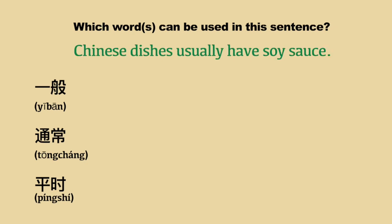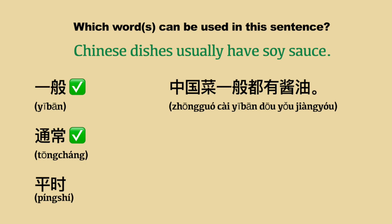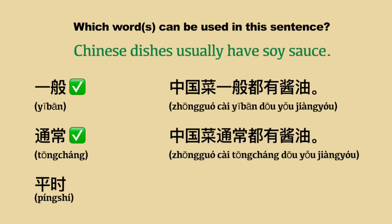Sentence two: 'Chinese dishes usually have soy sauce.' The answer is we can use 一般 or 通常: 中国菜一般都有酱油 or 中国菜通常都有酱油. We can't use 平时 here, because 平时 refers to normal days or times, but here we're describing how something usually functions — it is not really time-related.